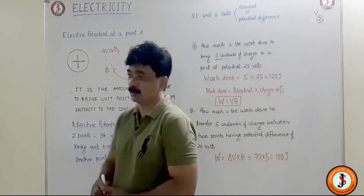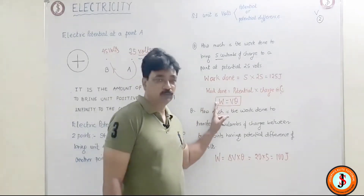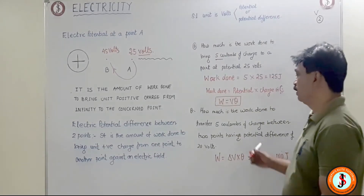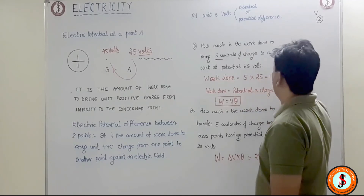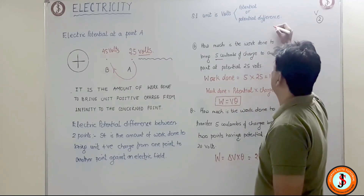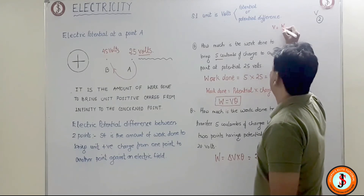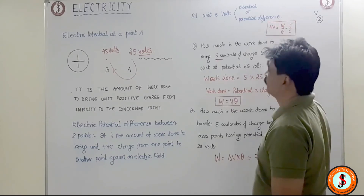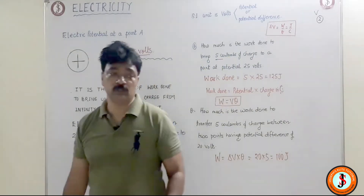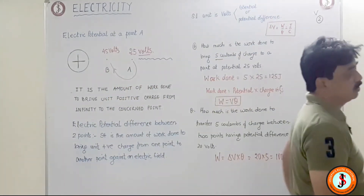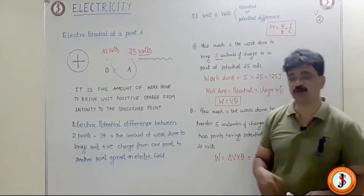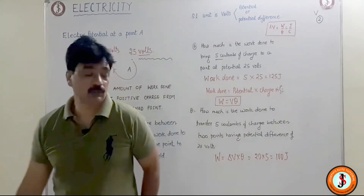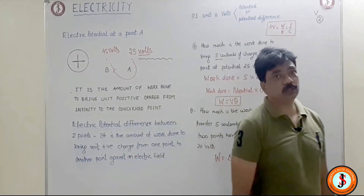Also understand the units: the unit of work done is joule and the unit of potential is volt. Joule divided by volt equals Coulombs. In other words, the unit of potential or potential difference can be written as V equals W by Q, that means joule per Coulomb. So there are two units: the SI unit of potential or potential difference is volt, or it can be expressed as joule per Coulomb.